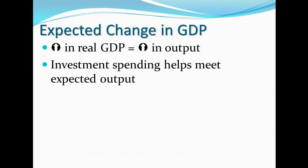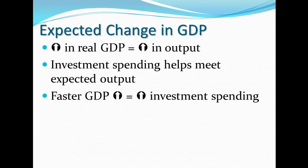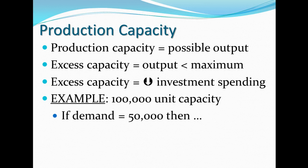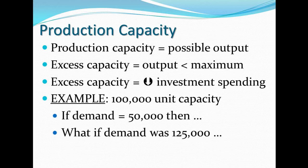Expected change in GDP: if real GDP increases, investment spending is going to help meet the expected output. The faster the growth in the economy, the more investment spending. If they expect the economy to shrink, there will be less investment spending. Also, if you have large production capacity but are currently under capacity — say demand is 50,000 but you can make 100,000 units — there's no need to invest. On the other hand, if demand is 125,000, there is a reason to invest in your business.